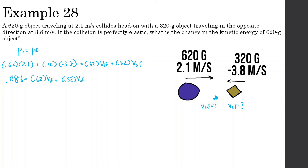We need two equations for two unknowns. For elastic collisions we use: V1 + V1F = V2 + V2F. Here V1 = 2.1 and V2 = −3.8, so: 2.1 + V1F = −3.8 + V2F. Rearranging: V2F = 5.9 + V1F.